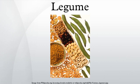A legume is a plant in the family Fabaceae, or the fruit or seed of such a plant. Legumes are grown agriculturally primarily for their food grain seed, for livestock forage and silage, and as soil-enhancing green manure.